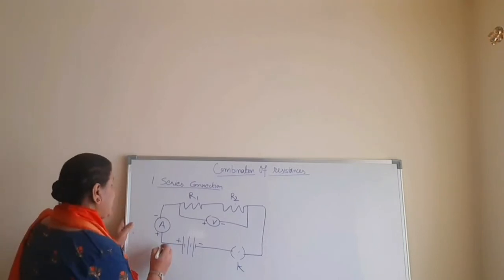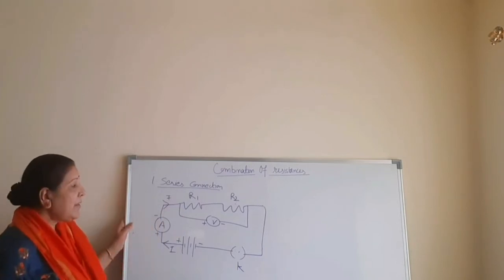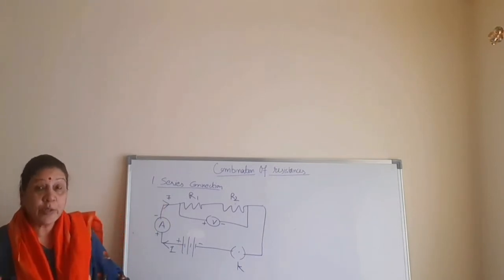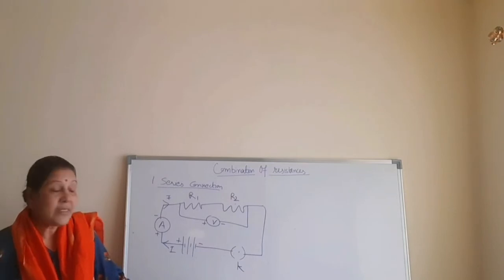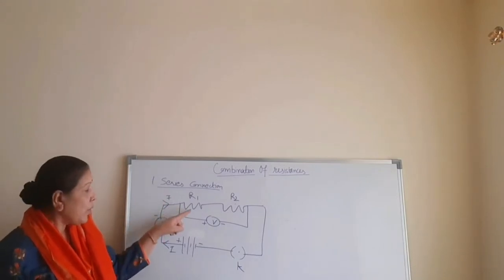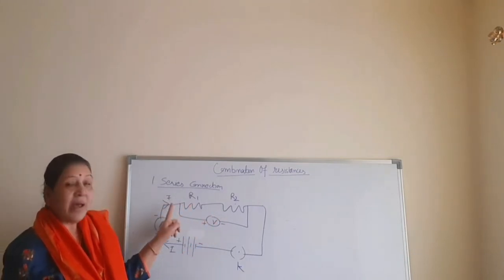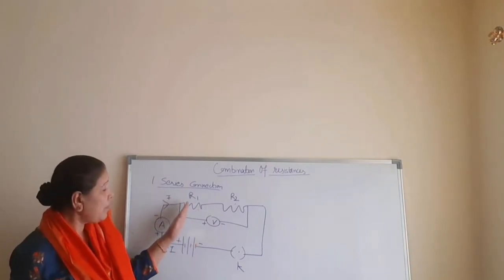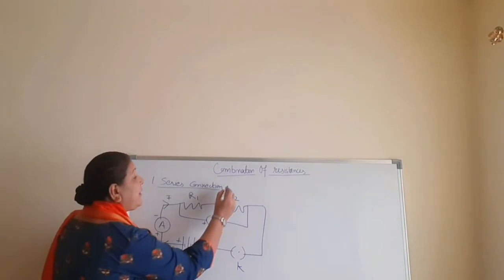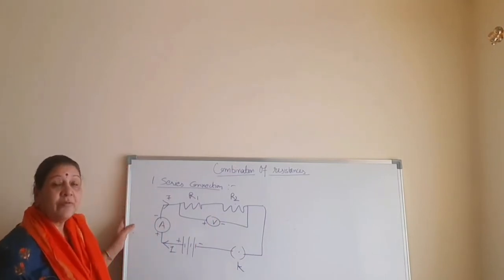Now say the electric current I is flowing through the circuit. The most important part is where we derive the formula for equivalent resistance. In series connection, always remember that I passing through R1 and R2 will be the same. If it's 2 ampere, the same 2 ampere will go to R1 as well as R2. So I will be the same in series connection, whereas V differs — the electric potential is going to be different for R1 and for R2.